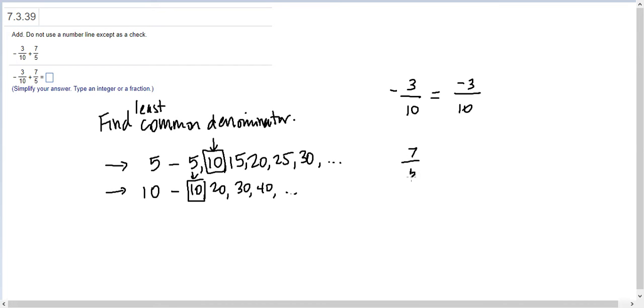But 7/5 does not. So we need to rewrite 7/5 as a fraction over 10. The way we do this is we say 5 goes into 10 how many times? It goes 2 times.